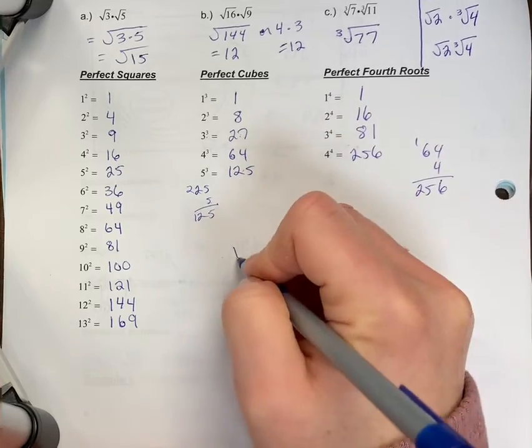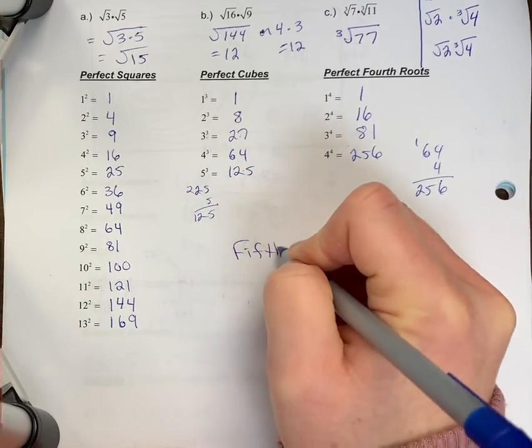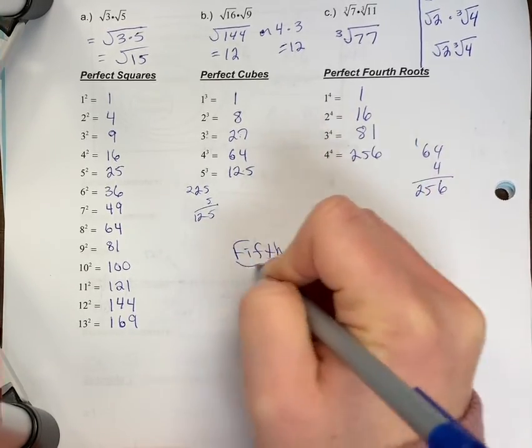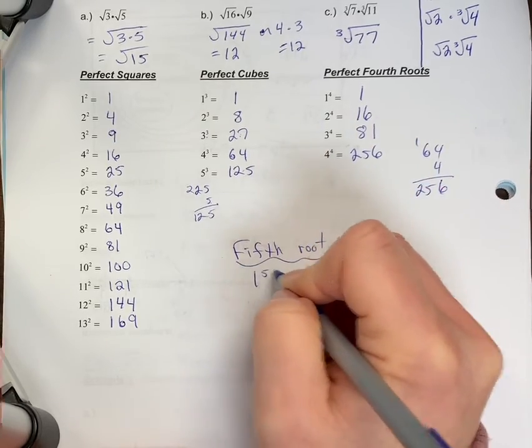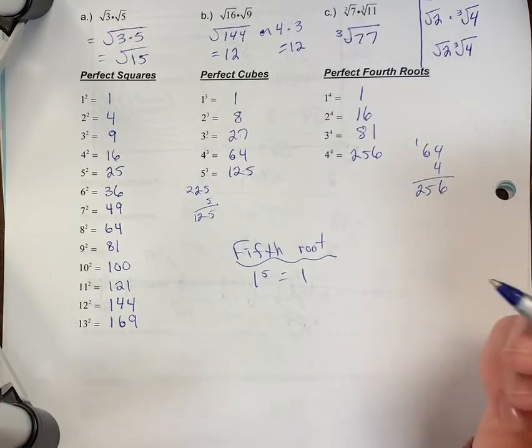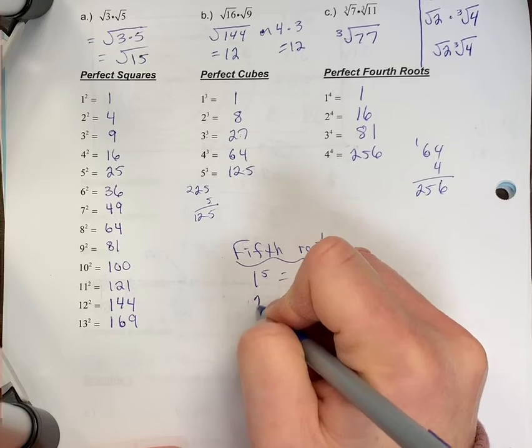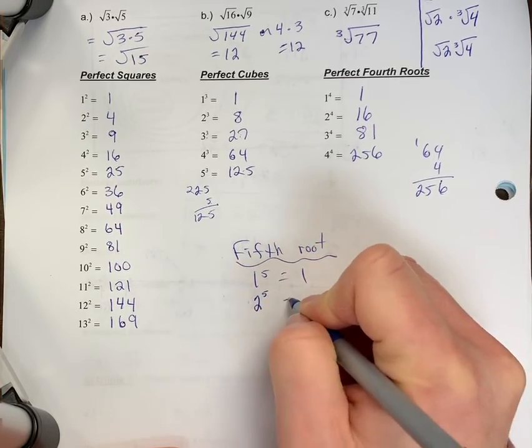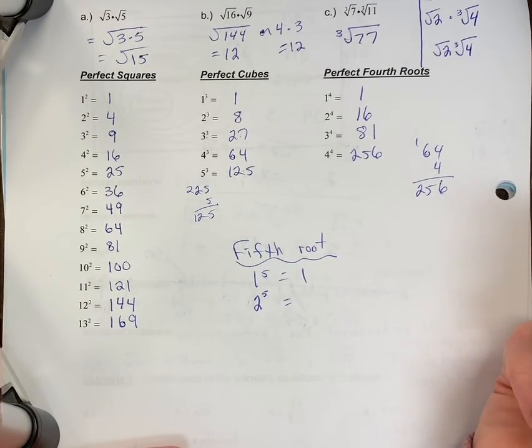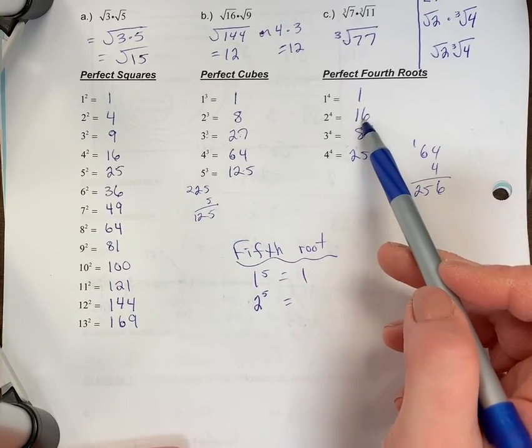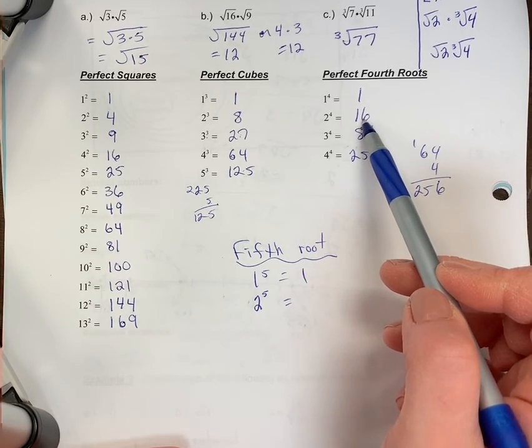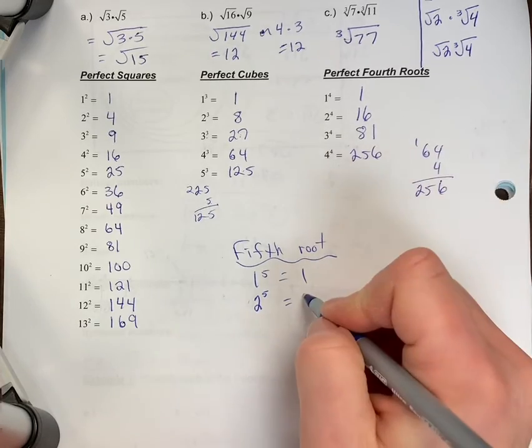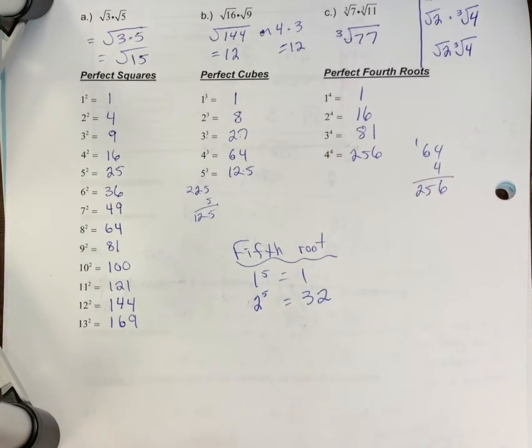And I need to add to this, you'll have to know for fifth roots. Of course, one to the five equals one. Those aren't really, I kind of don't really think of those as ones you really need to know because that's automatic. But what's two to the five? So two to the four, remember, is 16. So one more, double it again. So 16 times two is 32. So you'd be expected to know the fifth root of 32 is two.